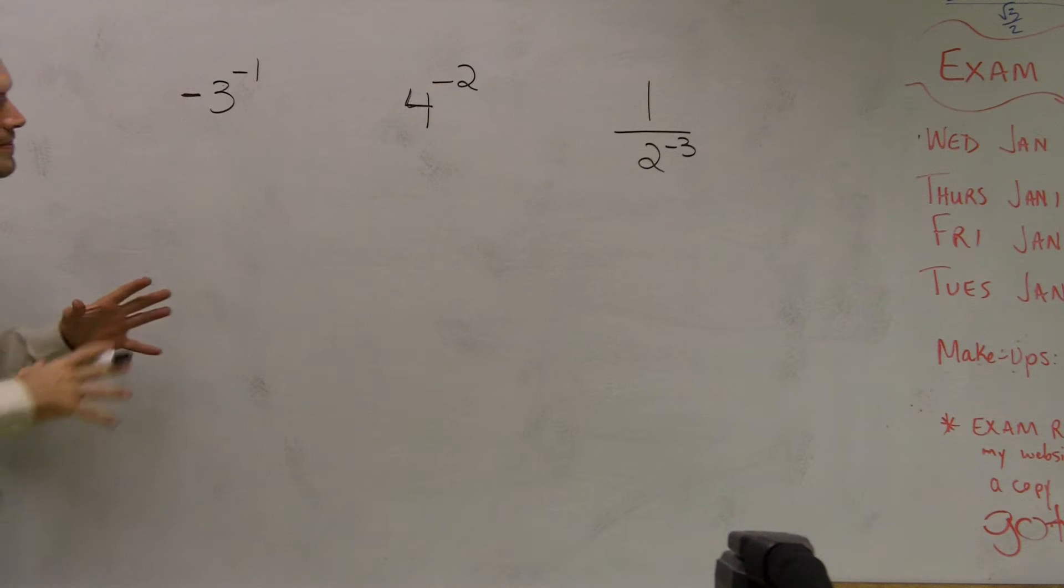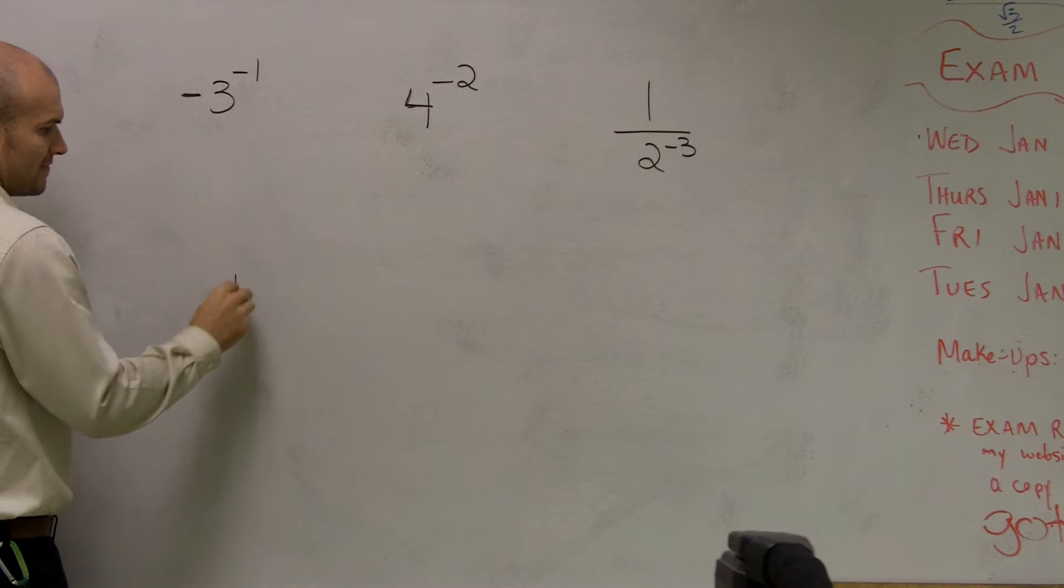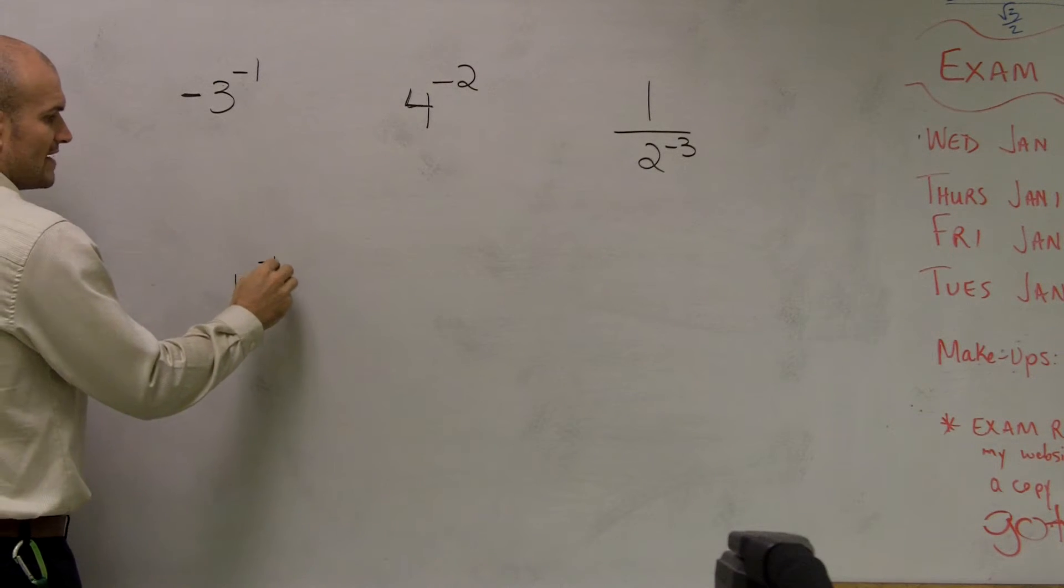What I'd like to do is show you the exponent rule for when you have negative exponents. So the negative exponent rule, what it tells us is if I have a number to a negative exponent,